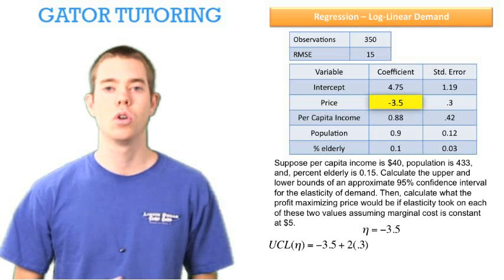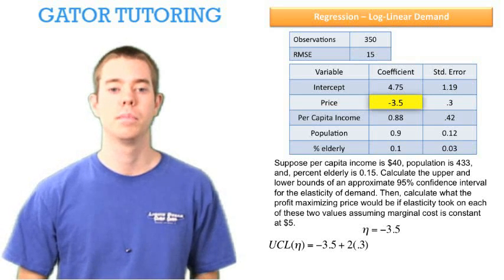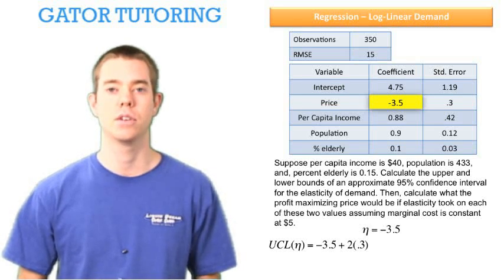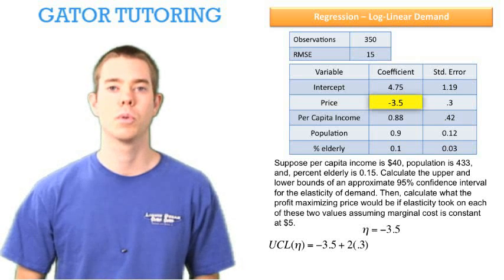The upper control limit will be the estimate plus two times its standard error. Usually, when we're doing the log of quantity demanded, we'll do two times the root mean squared error.